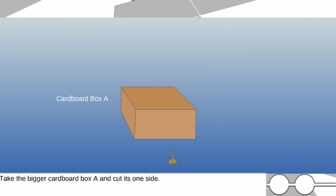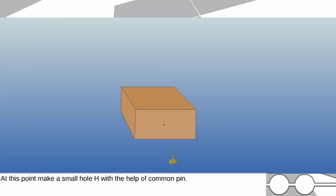Method: Take the bigger cardboard box A and cut its one side. In the opposite side, mark a point in its middle. At this point, make a small hole H with the help of common pin.